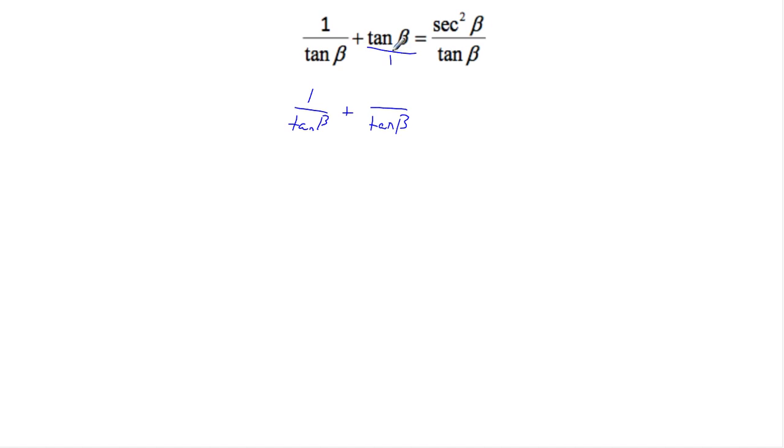To do that with this fraction, I multiply the denominator by tangent of beta. In the numerator, I have to multiply as well. So tangent times tangent is tangent squared of beta.